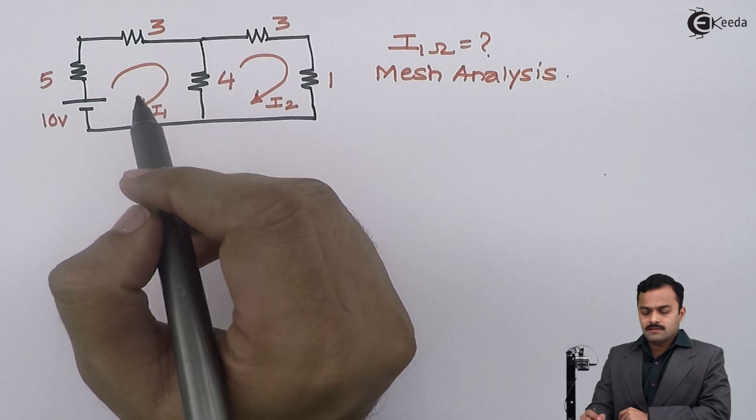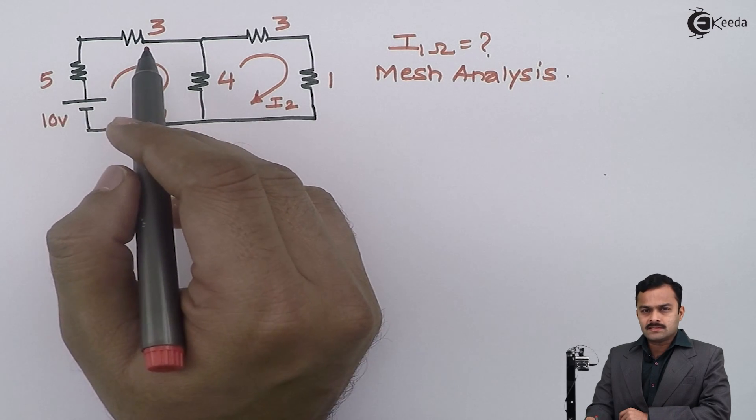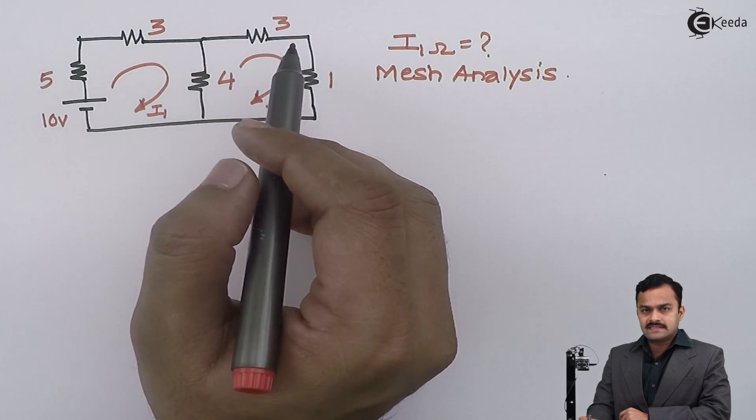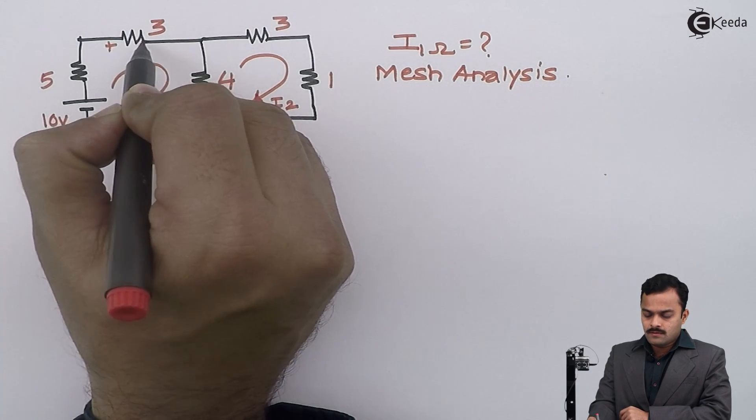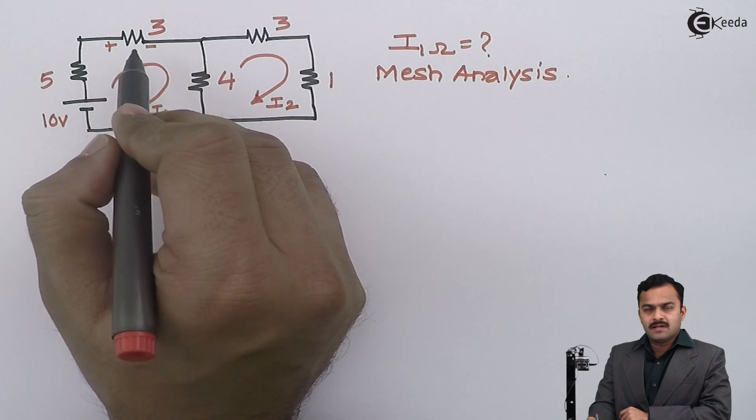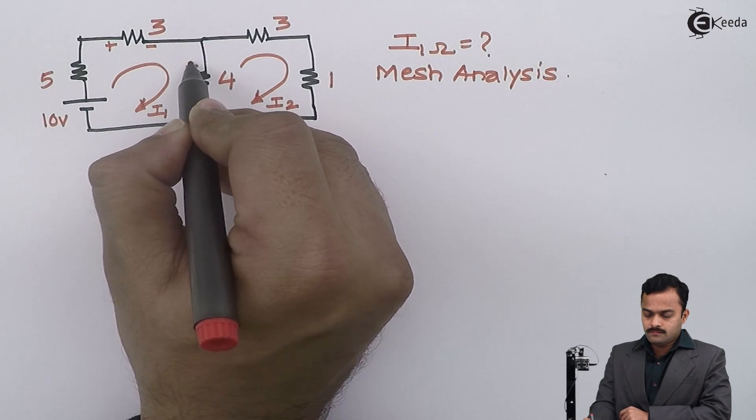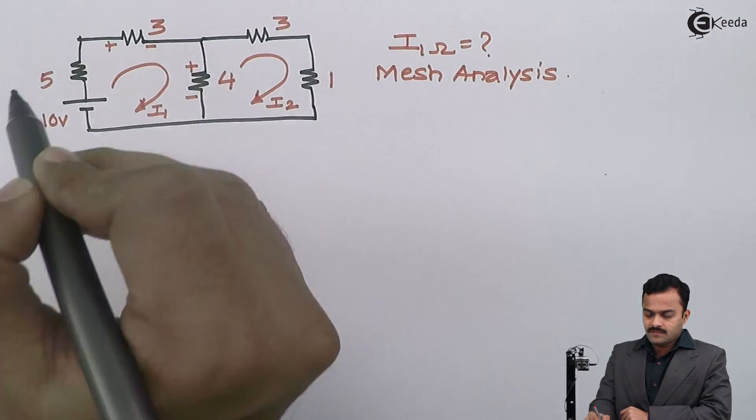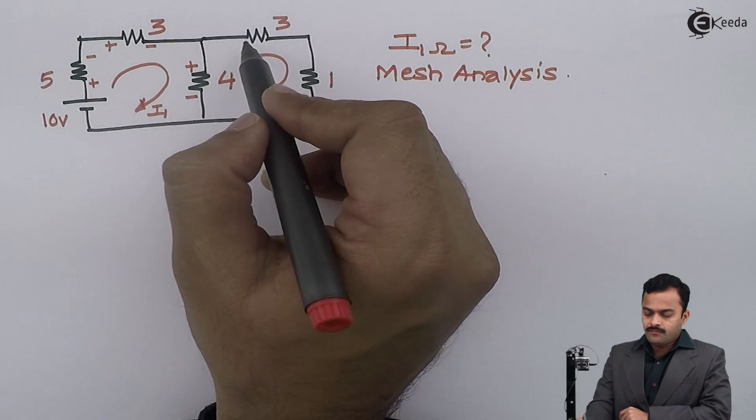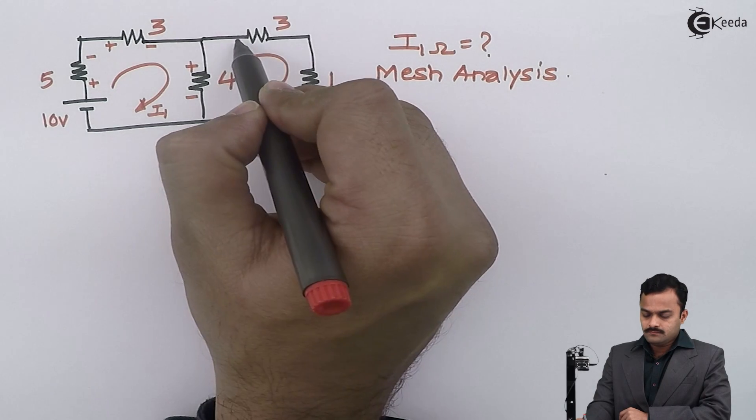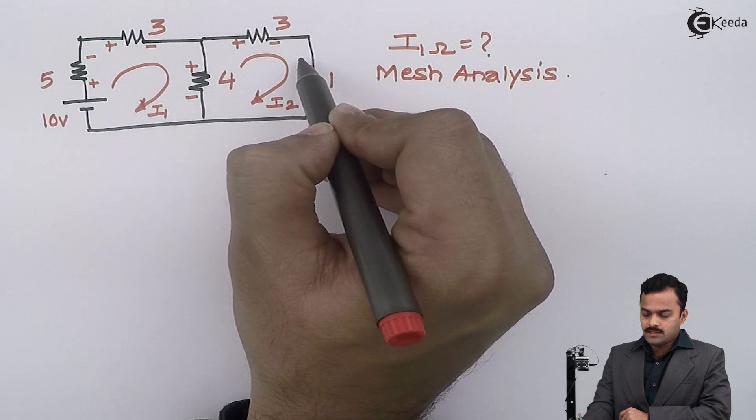In the direction of current, let's mark all the voltages that got developed across number of resistances. Meaning for this resistance the drop is in the direction of current plus minus, for 4 ohm it is like this, for 5 ohm it is plus minus. Similarly for this loop the voltage drops will be like this as I mentioned.